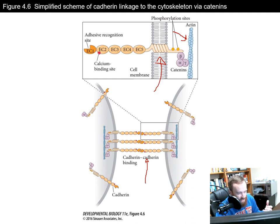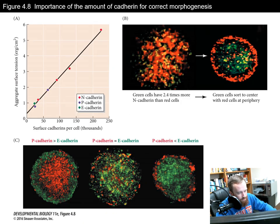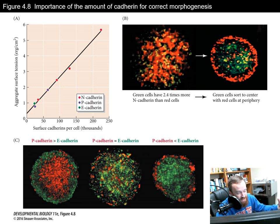The anchoring to the actin cytoskeleton allows cadherins to transduce signals between cells, leading to changes in gene expression. The amount and type of cadherin molecules on the cell membrane helps determine the morphogenesis and organization of tissue. There's a direct relationship between bond strength and the number of cadherin molecules: if you have more of these molecules, the bonds are stronger, and cells with many cadherin molecules will be attracted to other cells with many as well.